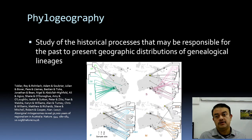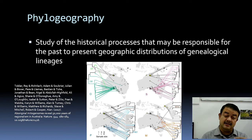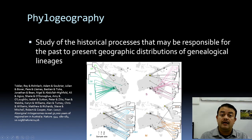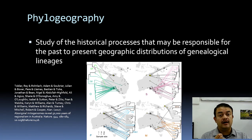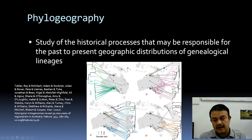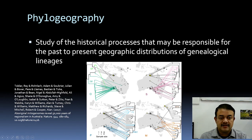Phylogeography is about the historical processes responsible for the past and present geographic distributions of genealogical lineages, within populations and within species. For example, examining mitochondrial haplotypes (mitogenomes) of 50 Aboriginal Australian individuals reveals that many clades cluster geographically — certain haplotype groups correspond to distinct geographic regions such as the north, south, or central parts of Australia.